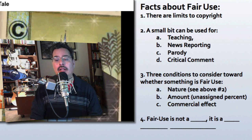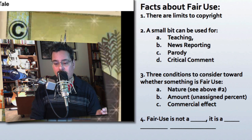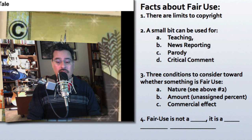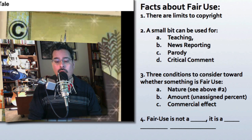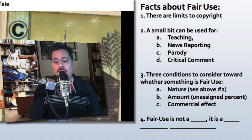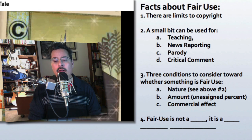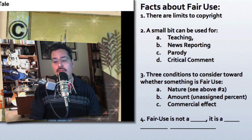The second condition is how much is used. Importantly, there is no specific amount set by law. This flies in the face of people who try to create policies like the six-second rule, the seven-second rule, or the 30-second rule. The law simply says it must be a very small percentage of the overall work.